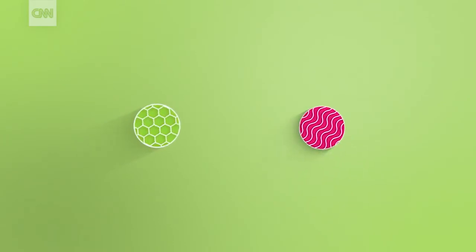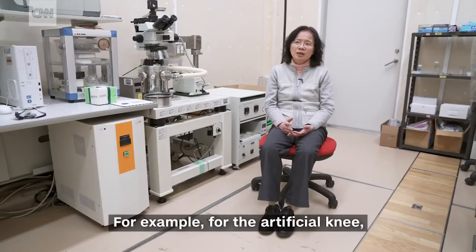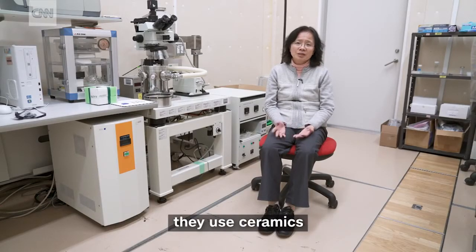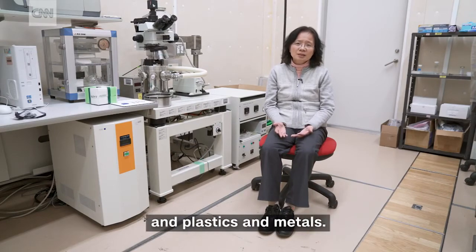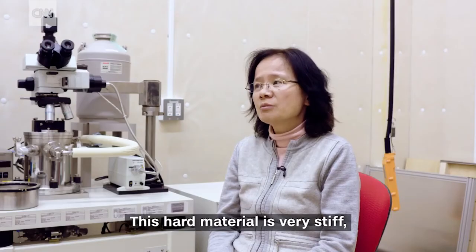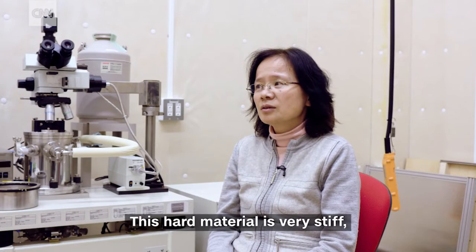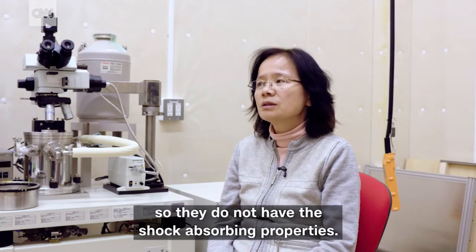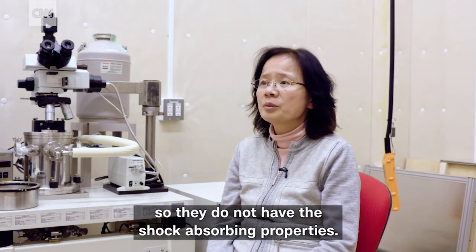For example, for the artificial knee, they use ceramics and plastics and metals. This hard material is very stiff, so they do not have the shock-absorbing properties.